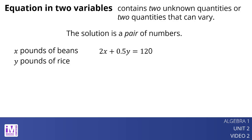If x represents pounds of beans and y represents pounds of rice, the equation 2x plus 0.5y equals 120 can represent the constraints in this situation. This is an equation in two variables. More than one pair of values for x and y make the equation true, so it has two quantities that can vary.